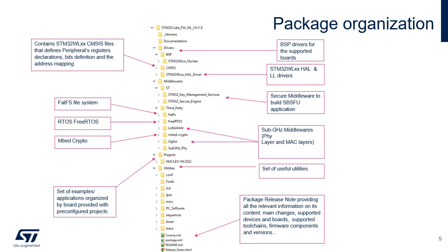Secure Engine is a secure enclave for sensitive operations execution. Like all STM32 Cube firmware packages, the STM32 Cube WL firmware solution comes in a single zip file having the structure shown in this slide. It is organized in several main folders. The documentation folder contains the STM32 Cube WL getting started document, helping developers to quickly become familiar with the firmware package and its contents. The Drivers folder contains all the ST-developed drivers.